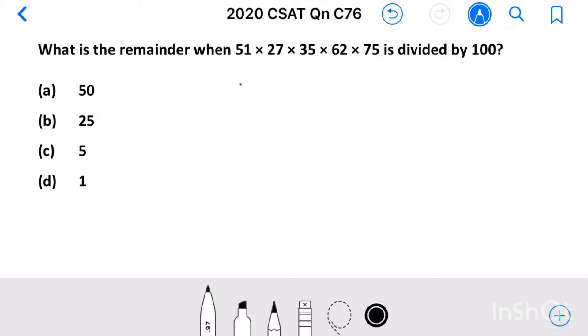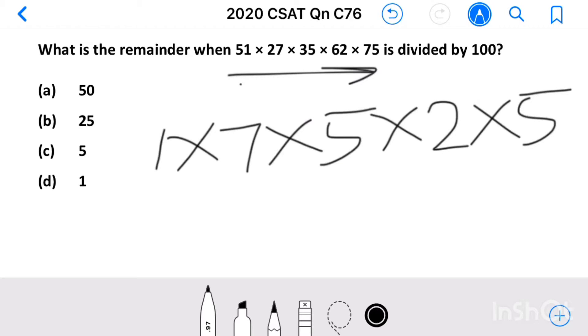To find the remainder, first multiply the last digit of all these numbers. So, 1 into 7 into 5 into 2 into 5, we get 350.